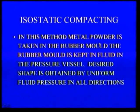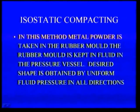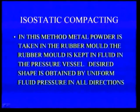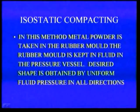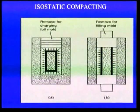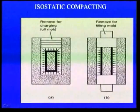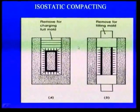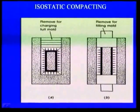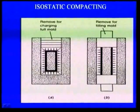Another compacting method is isostatic compacting. In isostatic compacting, the metal powder is taken in a rubber mould. Then the rubber mould is kept in fluid in a pressure vessel. The desired shape is obtained by uniform fluid pressure in all directions. Diagrammatically, the rubber mould is filled with metal powder and subjected to fluid pressure equally in all directions. In another variant, the raw metal powder is compressed only in other specific directions.